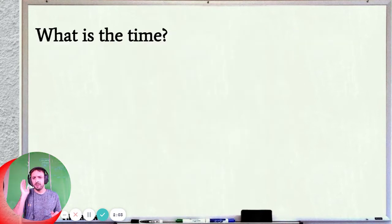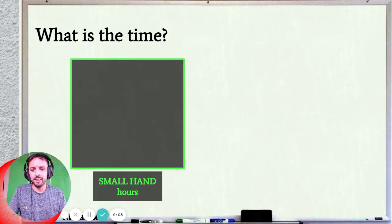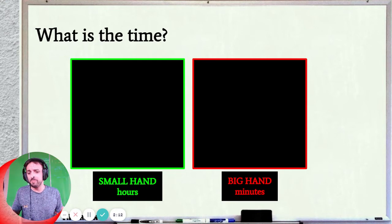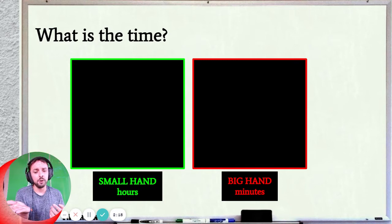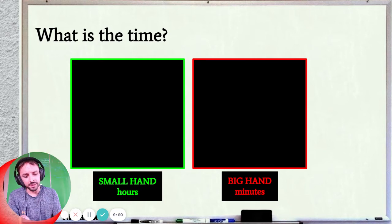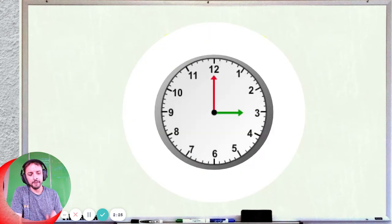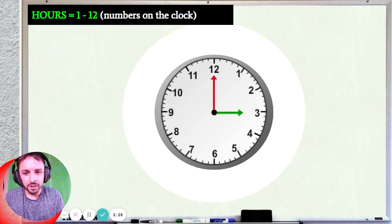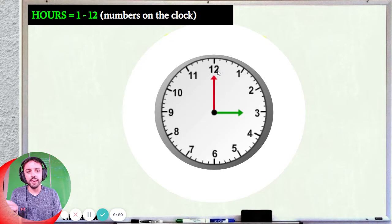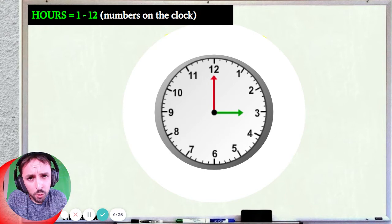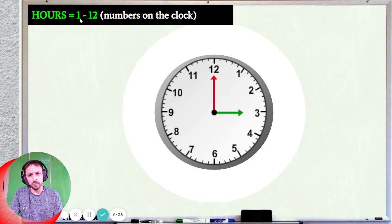What is the time? If anyone asks you for the time, you just need to tell them the hour and how many minutes — that's what they want to know. For the hours, you look at the number on the clock. The numbers 1, 2, 3, 4, 5, 6, 7, 8, 9, 10, 11, and 12 — those are your hours. The hours are 1 to 12.